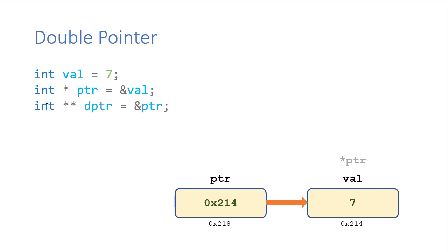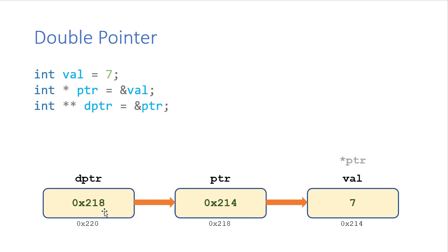Now a double pointer has two asterisks in the type declaration. We're going to have it hold the address of our integer pointer — so its value is 218, that's the address of the pointer. When I dereference that pointer, it becomes an alias not of the integer variable, but of the integer pointer whose address it holds. And then if I double dereference it, the first dereference gives me an alias of the integer pointer, and dereferencing that again is like dereferencing that integer pointer, which gives me an alias of the integer variable.